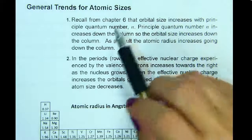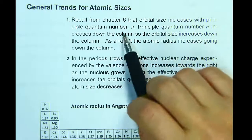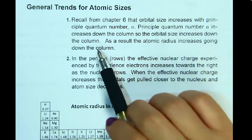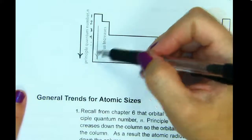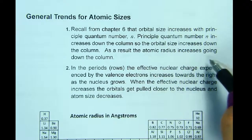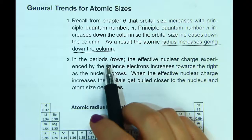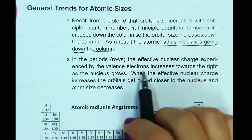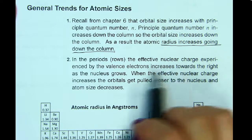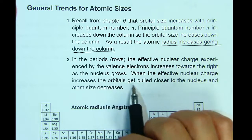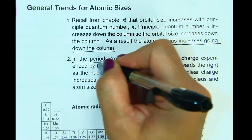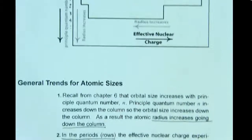General trends for atomic sizes. Orbital size increases with principal quantum number N, and N increases down the column, so orbital size and atomic radius increase going down the column. In a period — horizontally across a row — because the effective nuclear charge experienced by the valence electrons increases going to the right as the nucleus grows, the orbitals get pulled closer to the nucleus and the atomic size decreases. So in a period, atomic size decreases going from left to right.